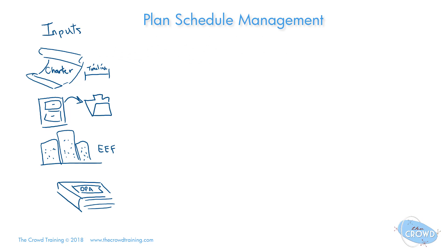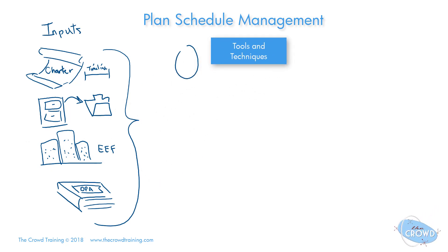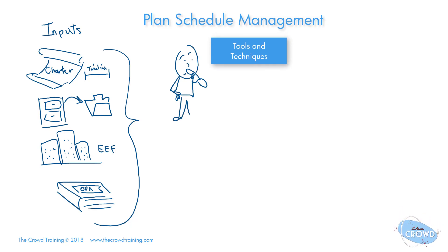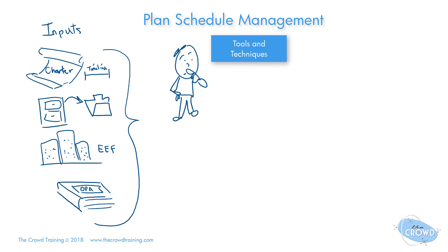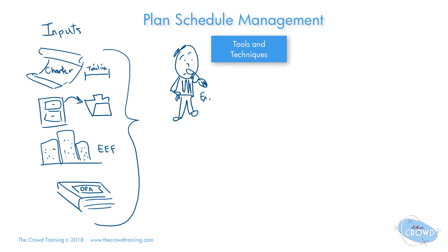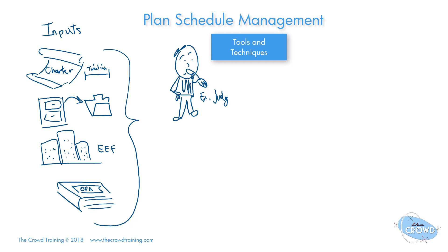Those are your basic inputs. Then we have the tools and techniques. One being expert judgment — I'm going to draw a person here who is thinking. These are our experts: people who are knowledgeable in how things work, what we need to do in terms of schedule, who have done it before and are good at estimating. Expert judgment can be far and wide.